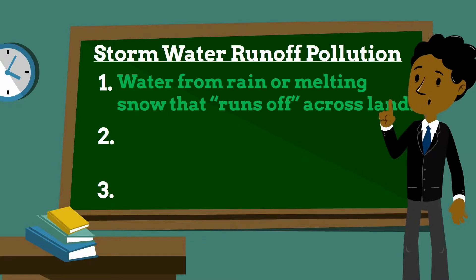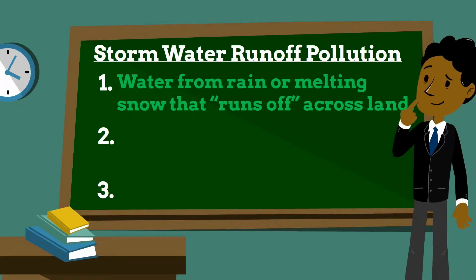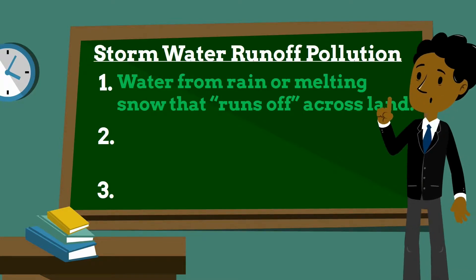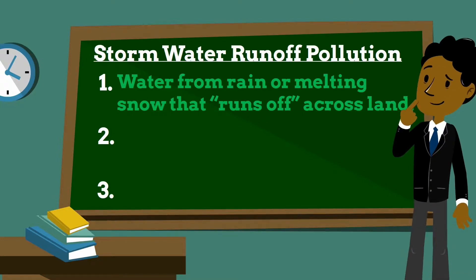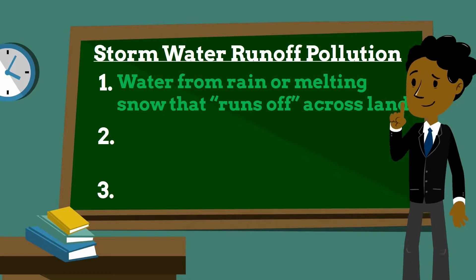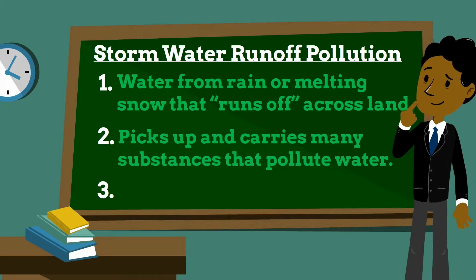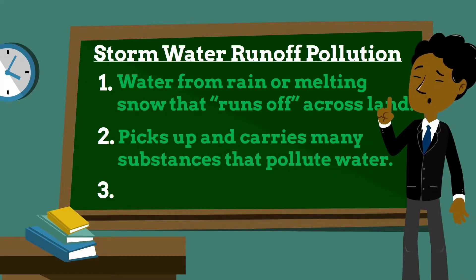Stormwater runoff is water from rain or melting snow that runs off across the land instead of seeping into the ground. The runoff is not treated in any way and it is usually flowing to lower areas into the nearest streams, creeks, rivers, lakes, or oceans. On its way, runoff water can pick up and carry many substances that pollute water.